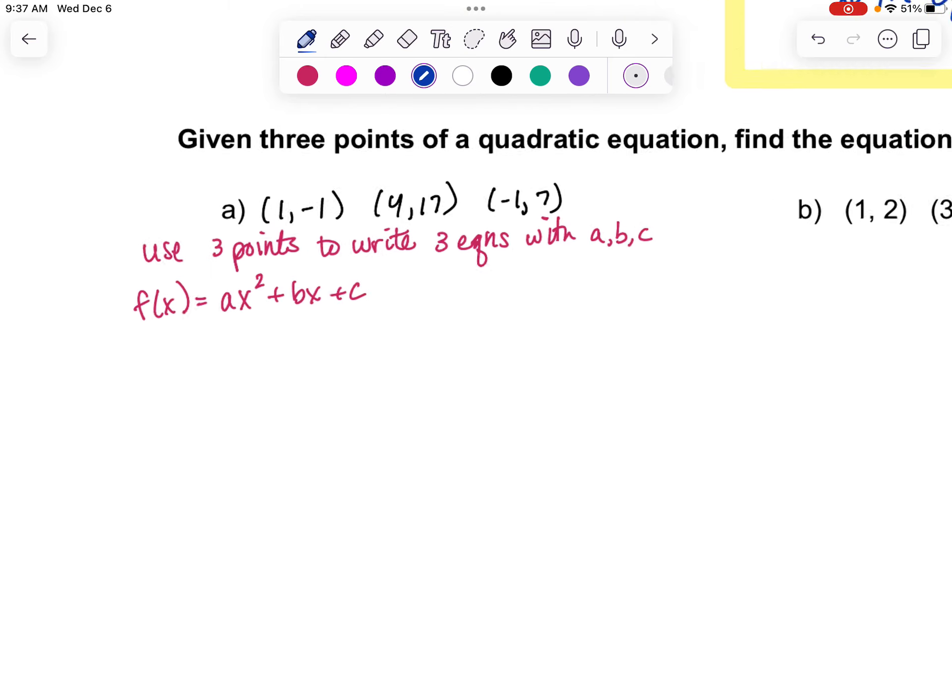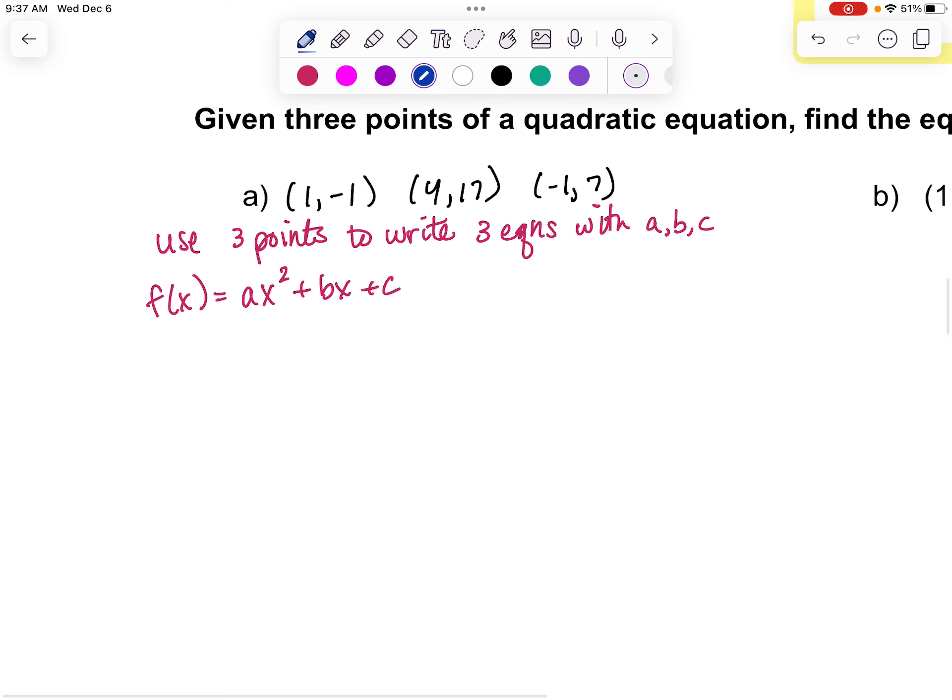So if we start out by thinking about the fact that any quadratic equation fits the model of ax squared plus bx plus c, we have three unknowns that we don't know, and in this case we have three points. So we can use those three points to generate three equations with a, b, and c, and then solve that system.